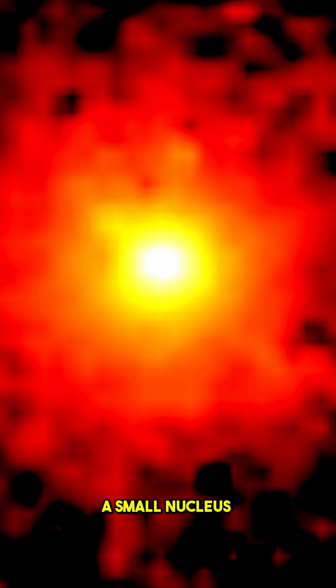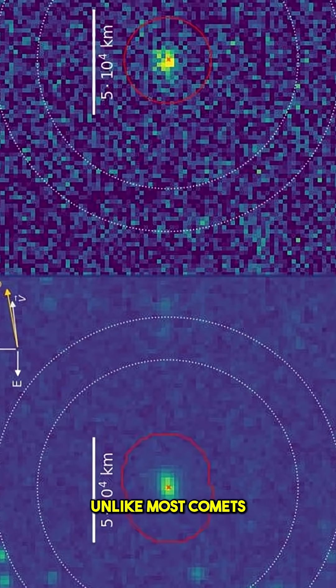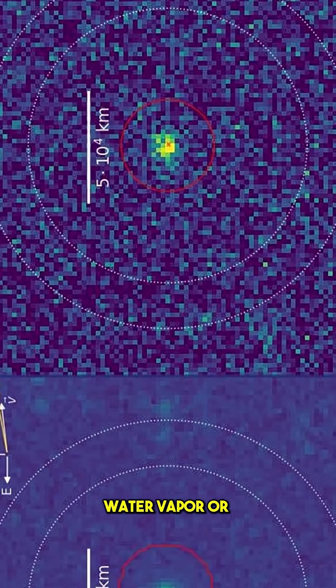What did it find? A small nucleus, less than 5 kilometers wide, surrounded by a huge carbon dioxide-rich coma. Unlike most comets, it shows almost no water vapor or carbon monoxide.